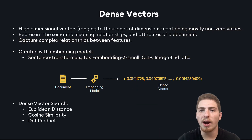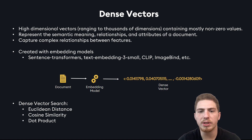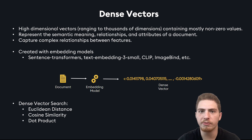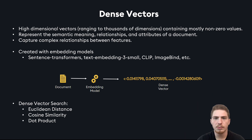Dense vectors are high-dimensional vectors containing mostly non-zero values, so every single value is going to have some meaning associated with it. They can represent all the different semantic meanings, relationships, and attributes of a document and capture a lot of the complex relationships between the features. Dense vectors are good for comparing our query vector and our document vector semantically. Once we use an embedding model to generate our query and document vectors, we could use a similarity metric to compare them, like Euclidean distance or cosine similarity.